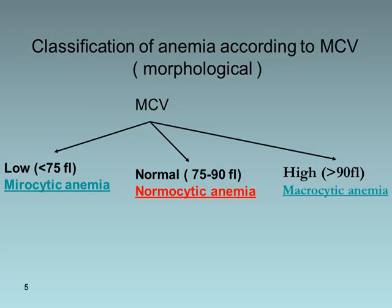Anemia can be classified morphologically according to the mean corpuscular volume (MCV) into three groups: microcytic anemia (MCV less than 75 fL), normocytic anemia (MCV 75–90 fL), and macrocytic anemia (MCV greater than 90 fL).